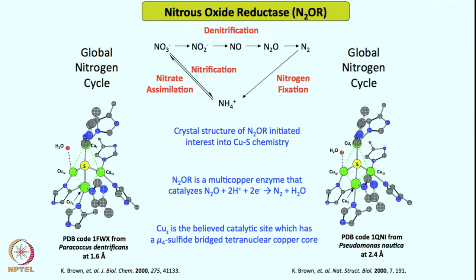The process by which nitrous oxide is converted to nitrogen is our major focus today. As you can see, nitrous oxide is going to nitrogen with the help of this enzyme known as nitrous oxide reductase, also known as copper Z side or copper G side. Copper G is the believed catalytic site, which has a mu-4 sulfido-bridged tetranuclear copper core. As you can see, 4 copper centers are bridged with this sulfide. This other center, which was not clear at the beginning, was initially believed to be a water molecule.